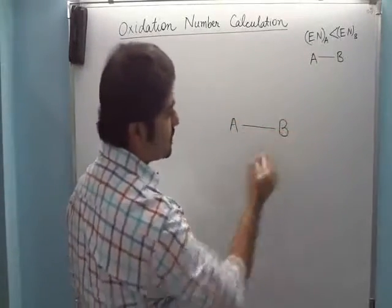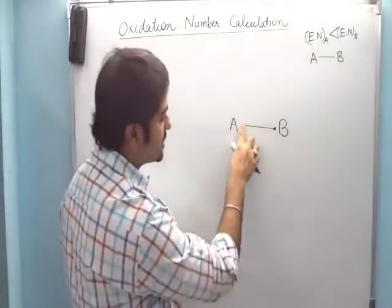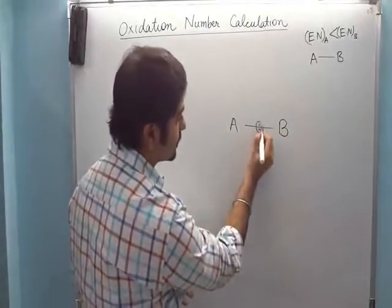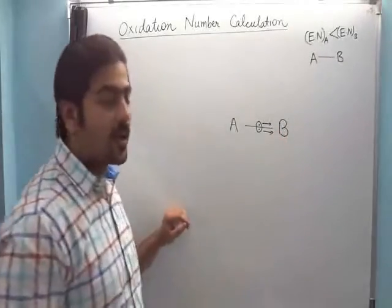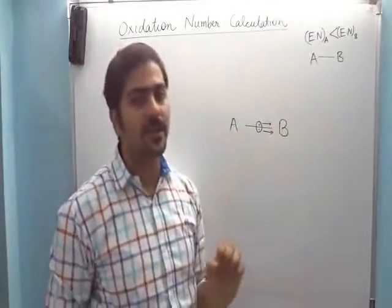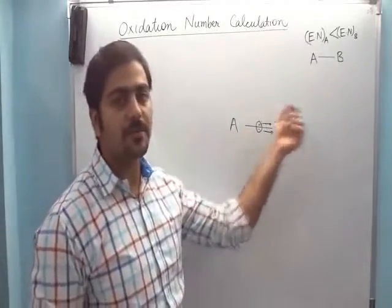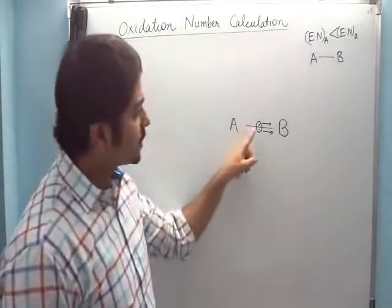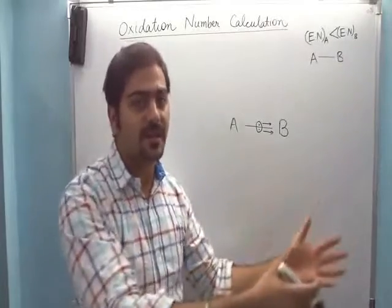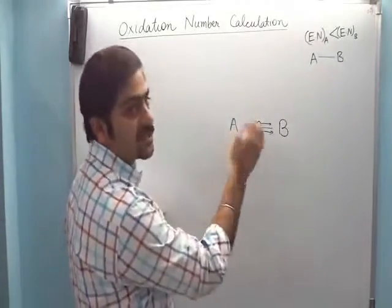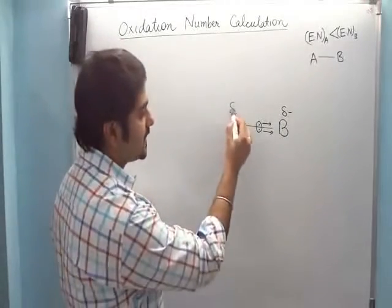If A and B are bonded together, there are two electrons in between — one electron belongs to B and one to A. We can represent both electrons as being shared in the middle. Now since B is more electronegative than A, both electrons shift slightly towards B. Because of that, B gets a partial negative charge and A gets a partial positive charge.